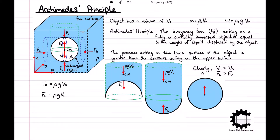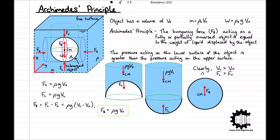The resultant vertical pressure force acting on the object, also known as the buoyancy force FB, is equal to Fl minus Fu and acts vertically upwards from the centre of mass of the volume of liquid displaced by the object. Substituting our equations for Fl and Fu, we get that FB is equal to ρg times VL minus Vu. Notice that VL minus Vu is just the volume V0 of the object, and so the buoyancy force FB is equal to ρgV0. So now we have introduced Archimedes' Principle and derived an equation for the buoyancy force for an object in a homogeneous liquid.